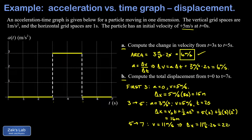Now we add them all up: in the first three seconds a displacement of 15 meters, during the acceleration phase 16 meters, and during the final coasting phase at the higher speed 22 meters. Adding all the displacements together we get 53 meters, and that's it.